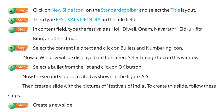Type the festivals as: Holi, Diwali, Onam, Navaratri, Idul Fithar, Vihu, and Christmas. Step 7: Select the content field text and click on the Bullets and Numbering icon.